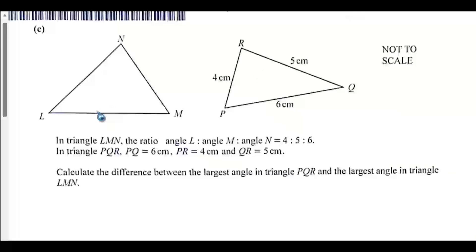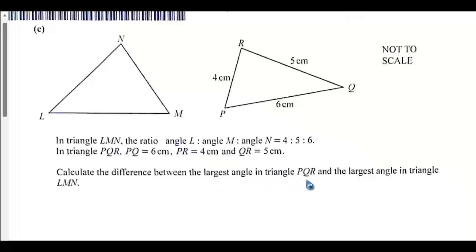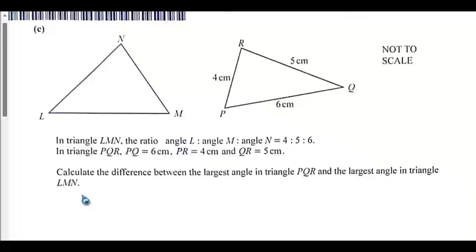Question 5c: In triangle LMN, the ratio of angle L to angle M to angle N is given as 4 to 5 to 6 respectively. In triangle PQR, PQ equals 6 cm, PR equals 4 cm, and QR equals 5 cm. Calculate the difference between the largest angle in triangle PQR and the largest angle in triangle LMN.